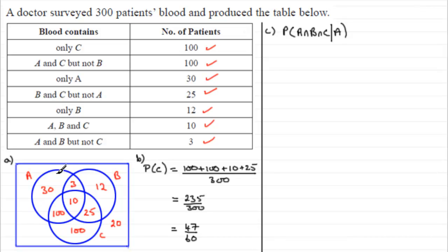You'd end up with 143. So 143 people have substance A in their blood. But of these, how many have all three? A and B and C?